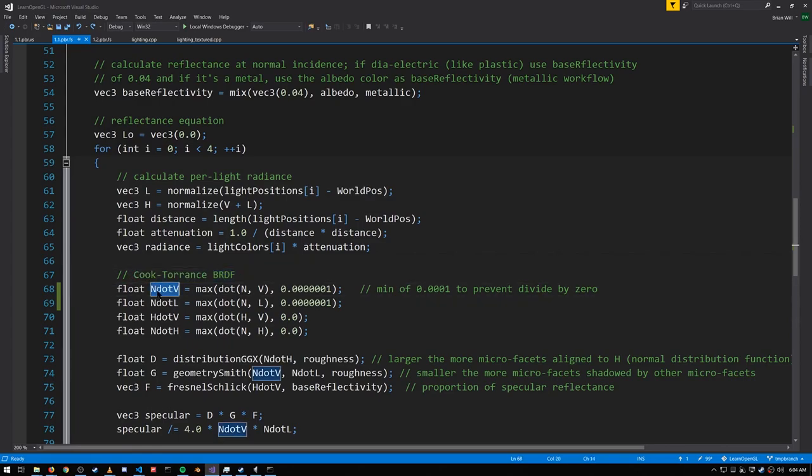We're going to need the dot products between N and V, N and L, H and V, and N and H. And note that for N dot V and N dot L, to prevent divide by zero errors down the line, we can't have these values be zero, so make sure there's something at least a little greater than zero. We then compute our normal distribution value, we'll call D. The result of the geometry function, the self-shadowing estimation, we call that G. And the result from our Fresnel function, we'll call F.